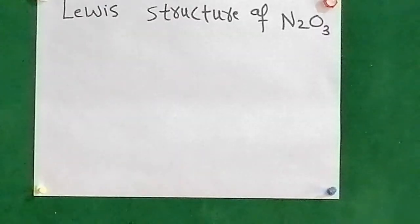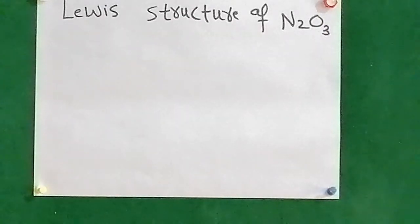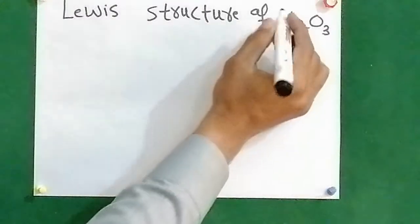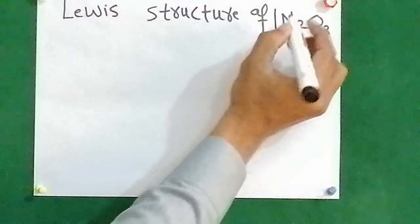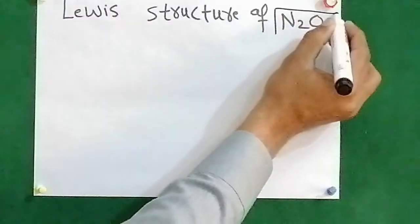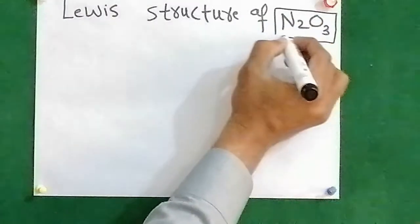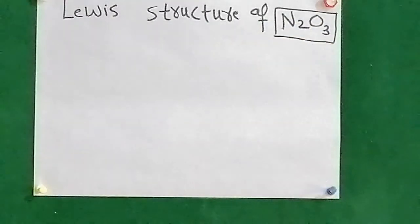Assalamualaikum students, today we are going to draw the Lewis structure of N2O3, dinitrogen trioxide.